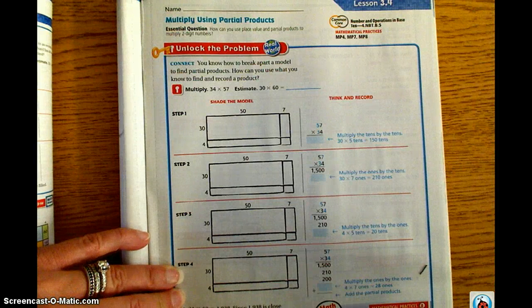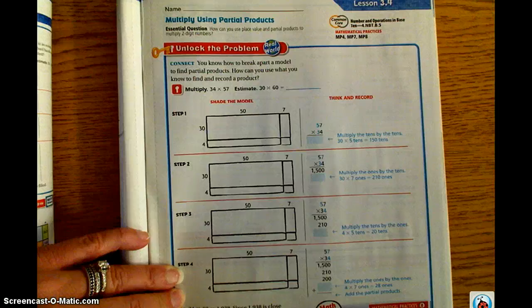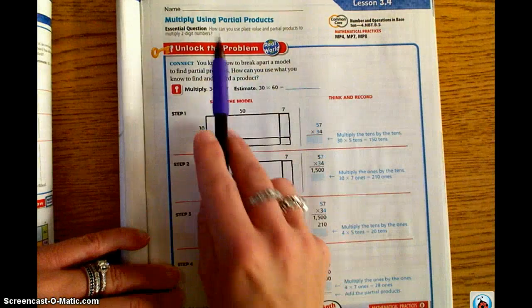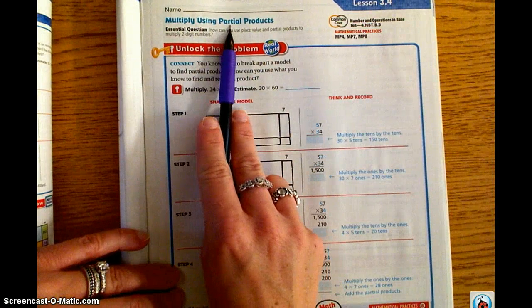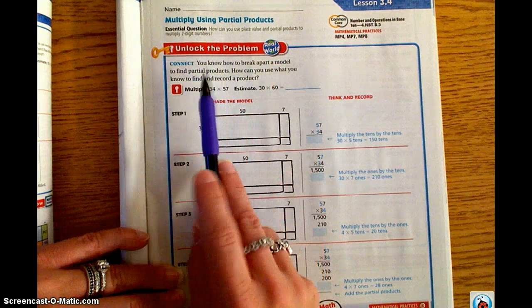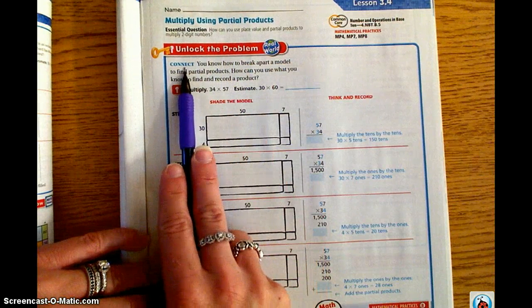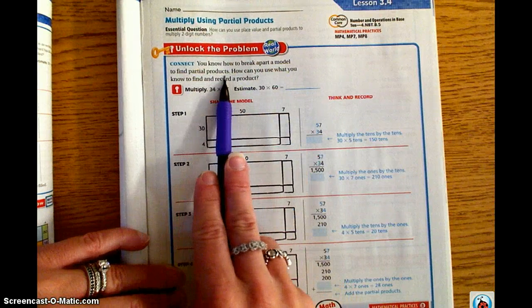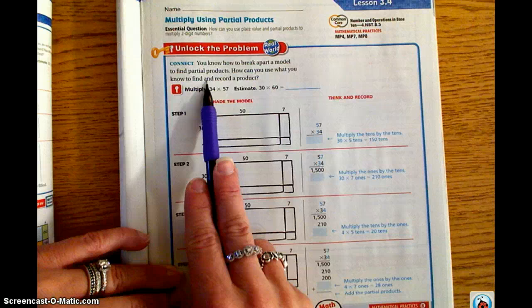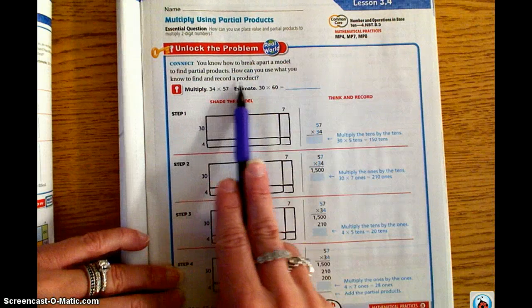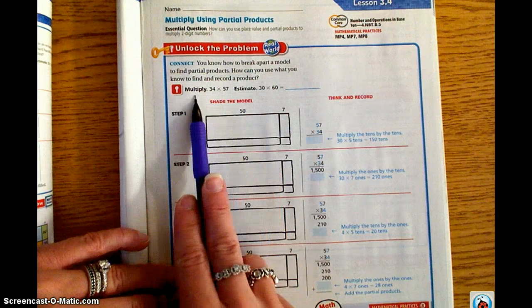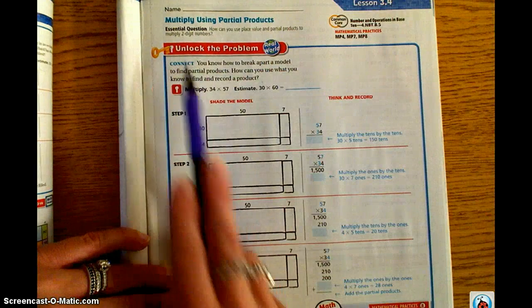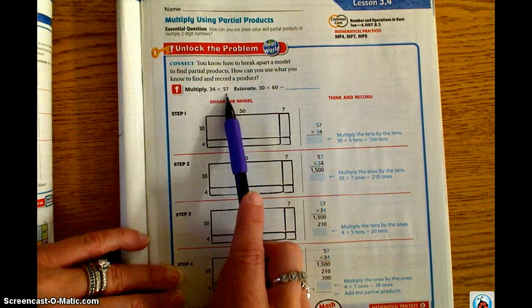One way that you can multiply two-digit by two-digit numbers is to use the partial products method, which we did look at in Chapter 2. If we jump down here to unlock the problem, it says the connection is you know how to break apart a model to find partial products. How can you use what you know to find and record a product? Our problem here is 34 times 57.